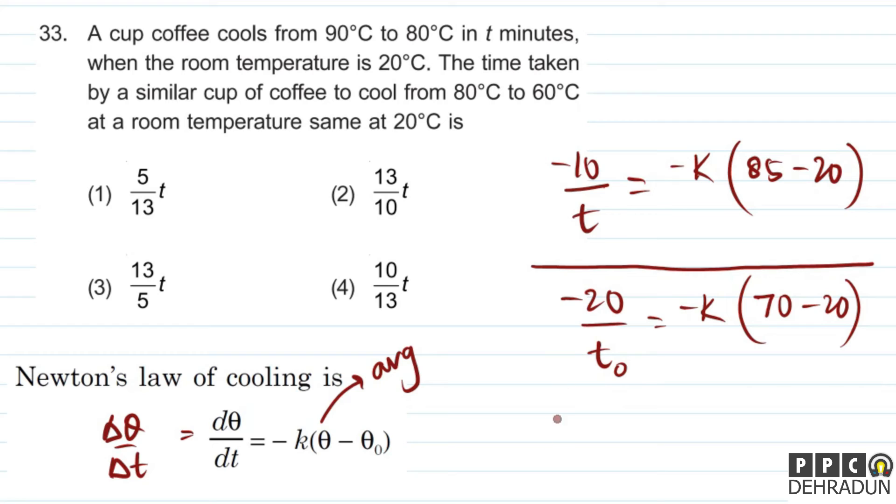Now we can divide these two equations. So t₀ upon 2t will be equal to (85 - 20), which is 65, upon (70 - 20), which is 50.